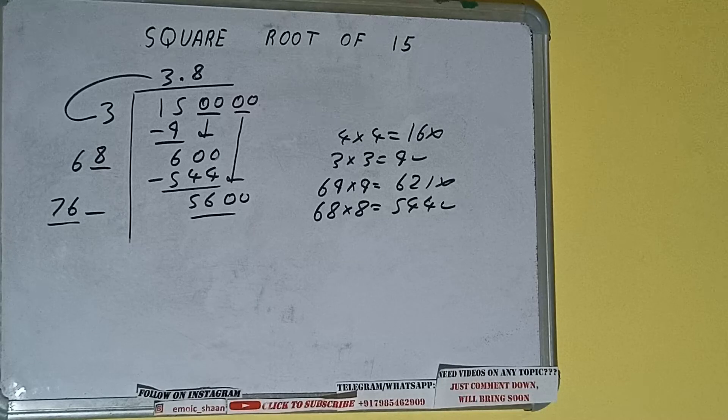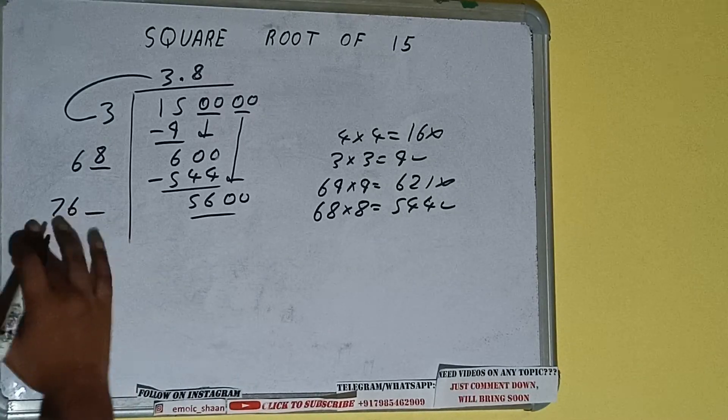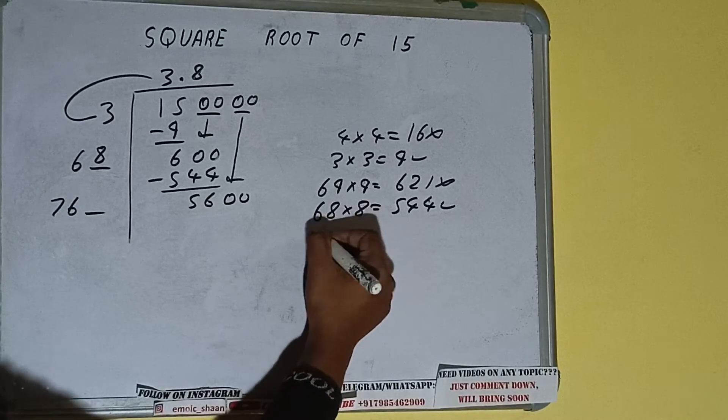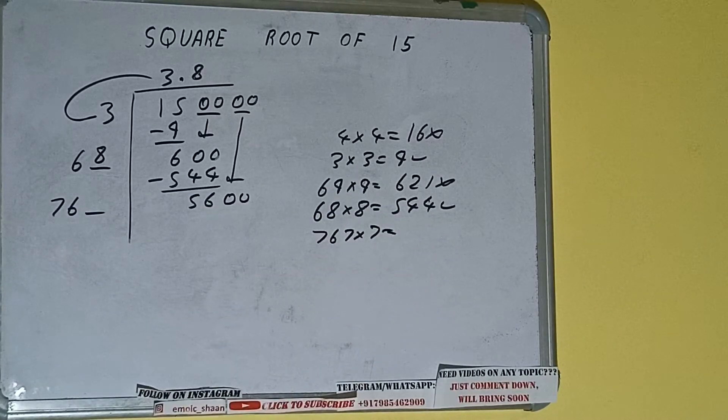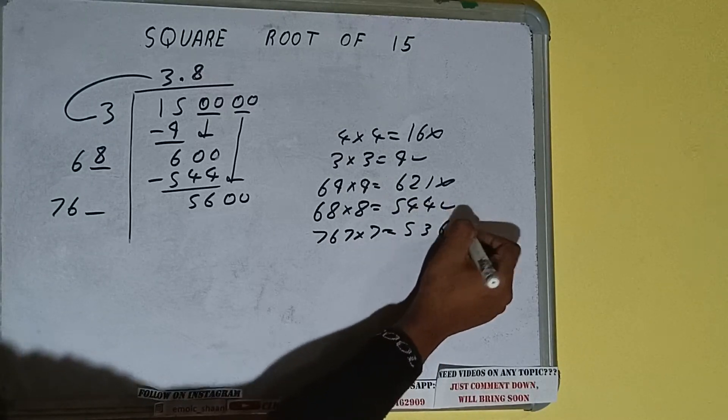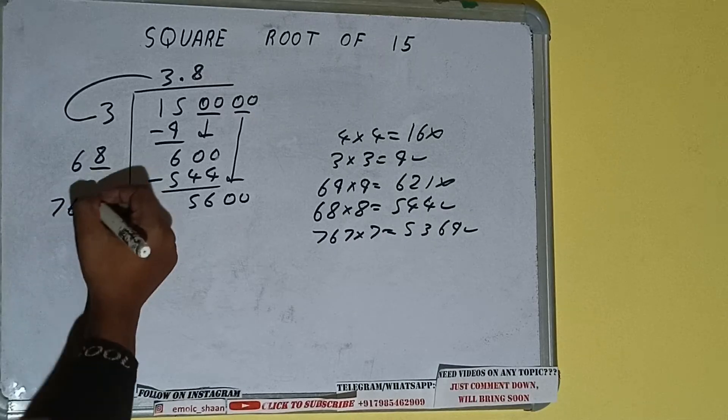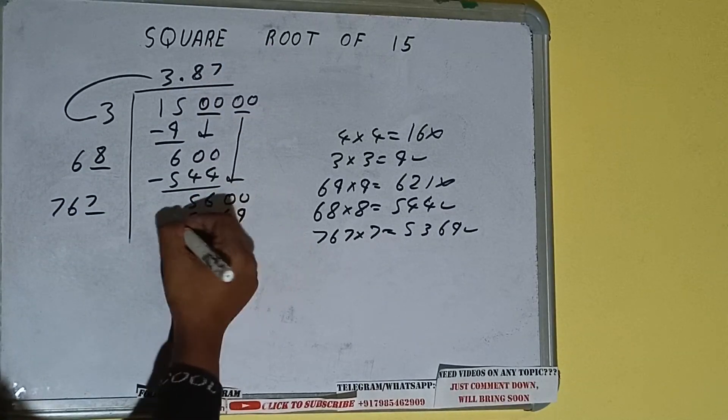Now compare this 76 with this 560. So 76 times 8 is 608, so we cannot try 8 times. Let's try 7 times. So 767 into 7, we can try. And we'll be having 5369, which is good to take. So 7 here and 7 here, 5369 subtract.